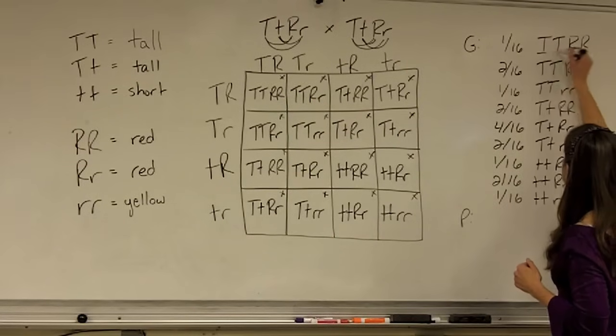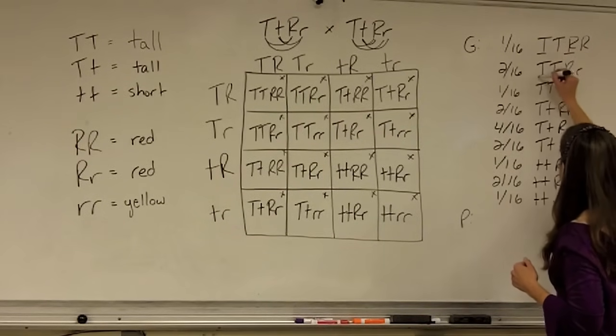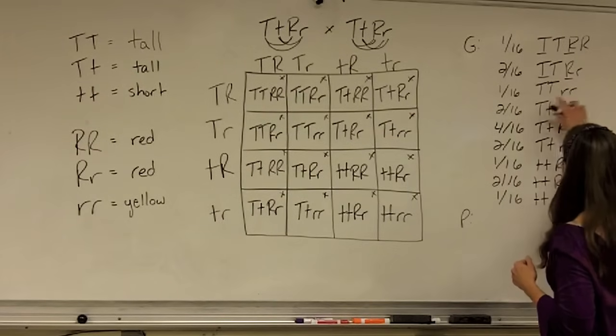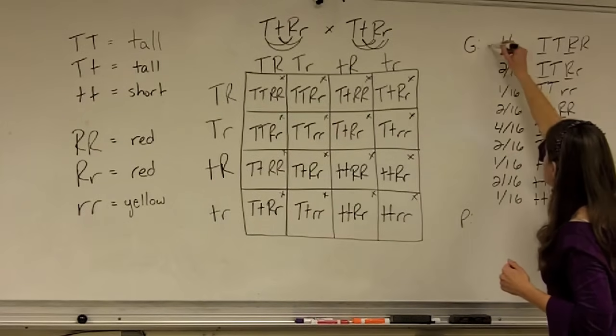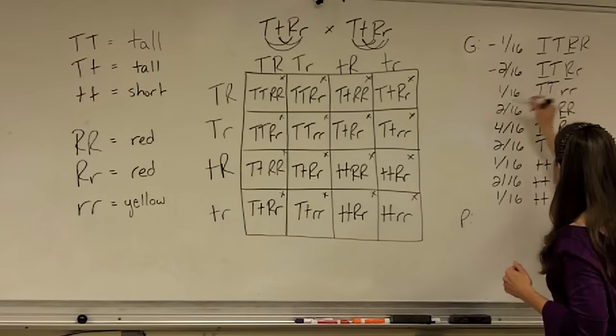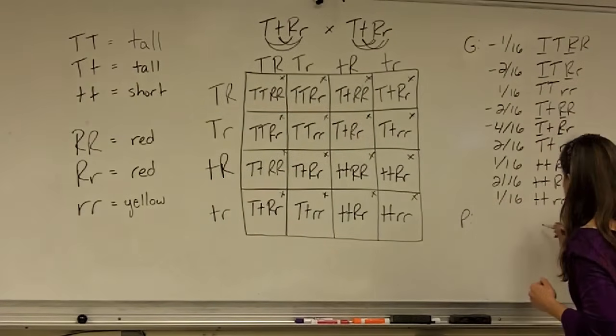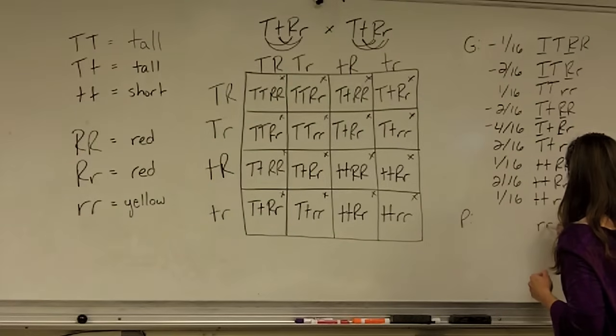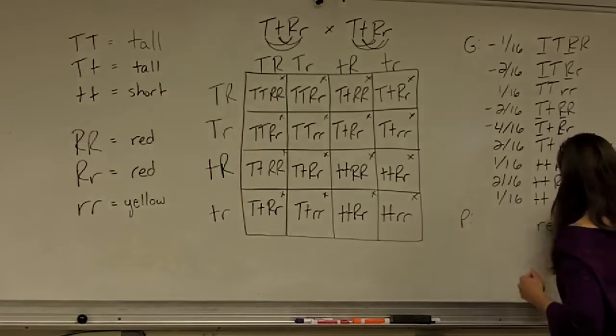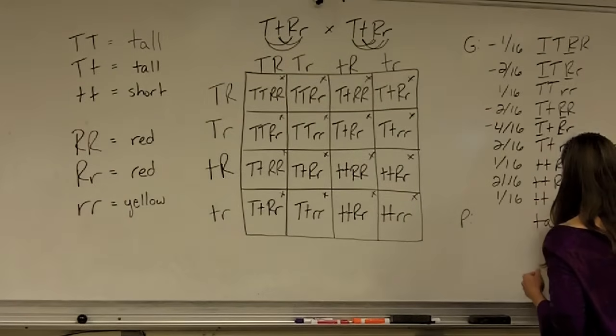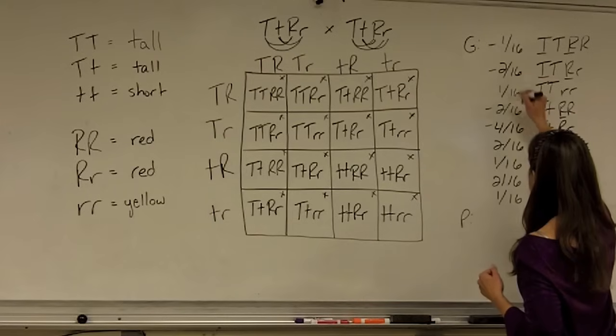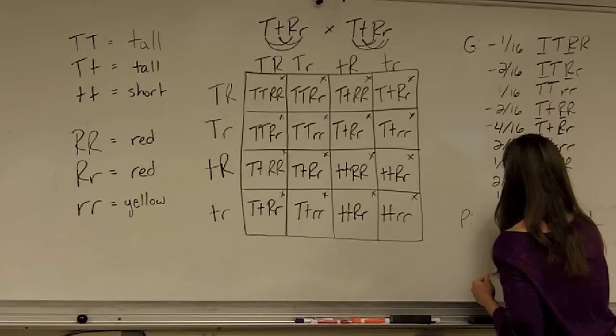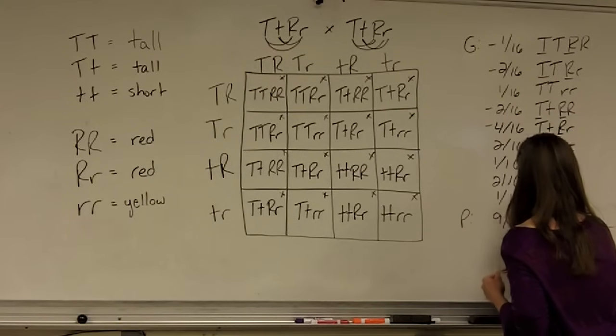So I can quickly add up these possibilities. For example, the ones that have both a big T and a big R? So these four had both a big T and a big R, which is going to make them tall and red. And one and two is three, and six is nine, so that means nine sixteenths are tall and red.